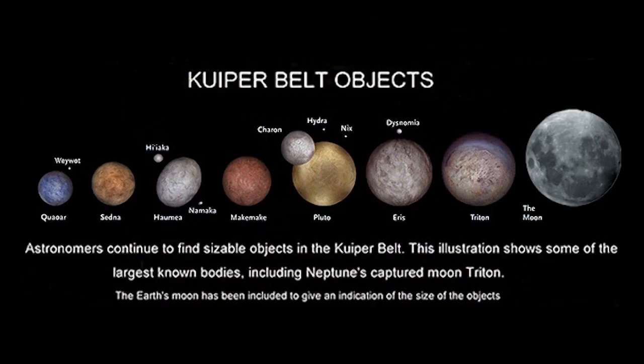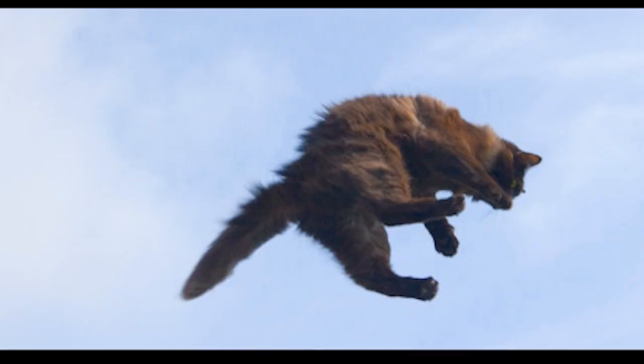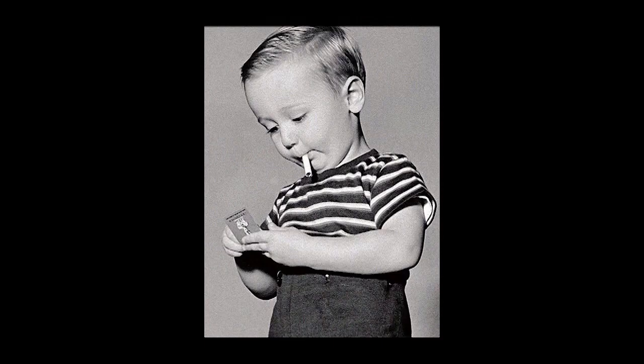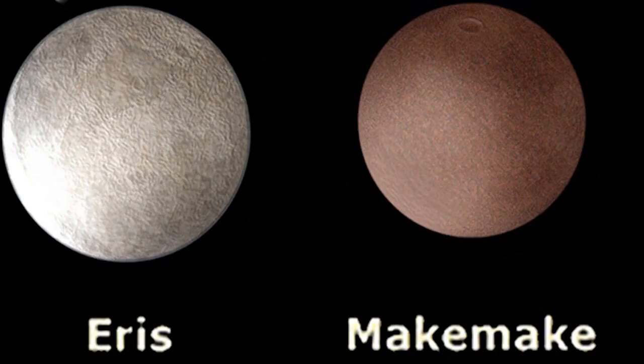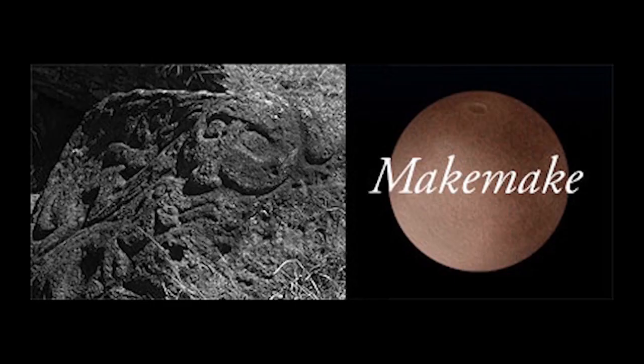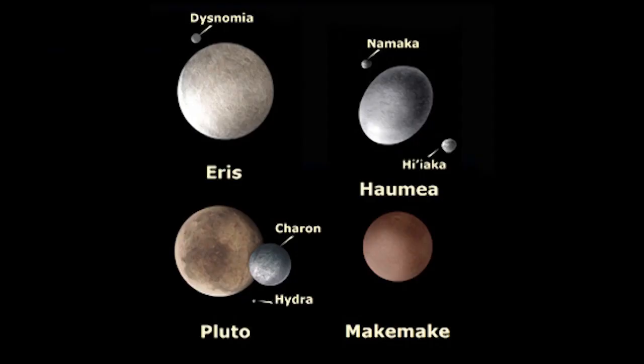Sedna is named after the goddess of the sea and marine animals, the mother or mistress of the sea. They say it's a lot like Neptune - a mix of water, methane ices, and tholin. They say it's not that big.